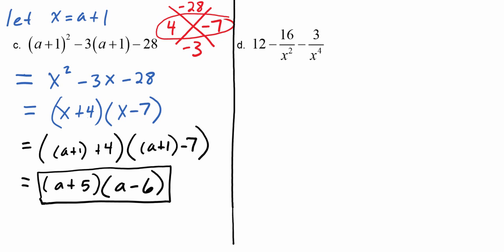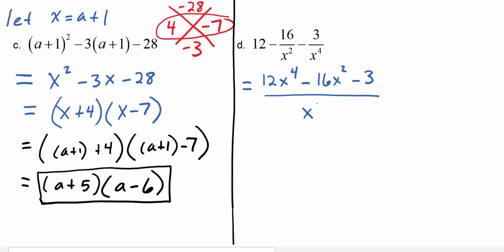Example D: the first order of business is to get a common denominator, which is x to the fourth. This gives us 12x to the fourth minus 16x squared minus 3, all over x to the fourth. We multiplied 12 by x to the fourth over x to the fourth, multiplied 16 over x squared by x squared over x squared, and the 3 already had x to the fourth in the denominator. Now we can factor the numerator separately.